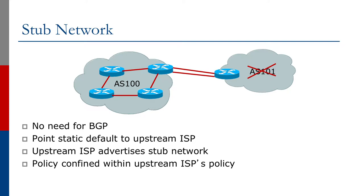In a stub network, the end site is connected to its upstream provider. The standard customer-to-service-provider link is usually provided by a single connection. In the diagram here, a second connection runs from the customer router to the same router on the upstream provider — basically two parallel links. There's no need for BGP here. All we need is a static default route from the local network to the upstream provider. The upstream provider will advertise the stub network and point routes to the end site as in the standard case.